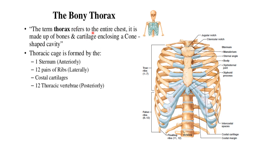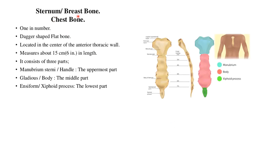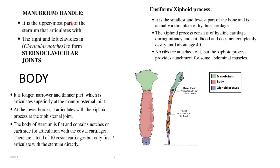The bony thorax refers to the entire chest and is made up of bone and cartilage. It consists of the sternum anteriorly, 12 pairs of ribs, costal cartilage connecting the sternum and ribs, and thoracic vertebrae posteriorly. The sternum, also known as the breastbone or chest bone, is one in number and present anteriorly. It is made up of three main parts: the manubrium (the handle — the uppermost part), the body (the middle part), and the xiphoid process (the lower part). The manubrium has an articular facet for the clavicle and articulation for the first rib.